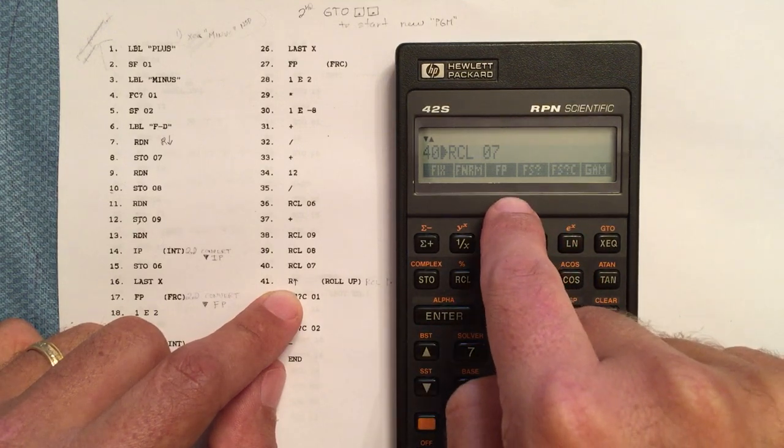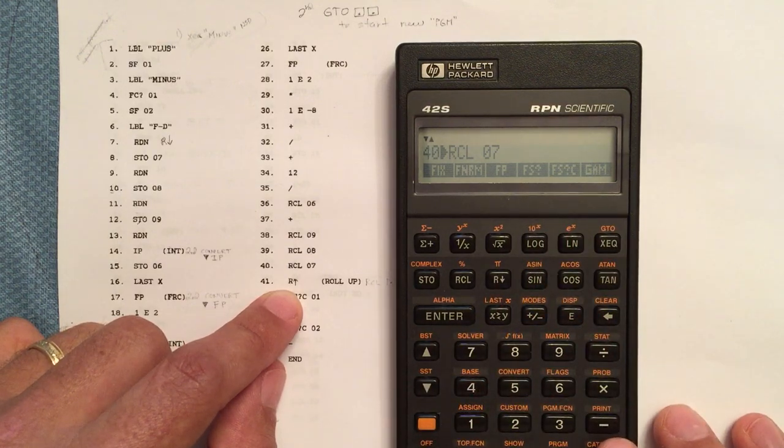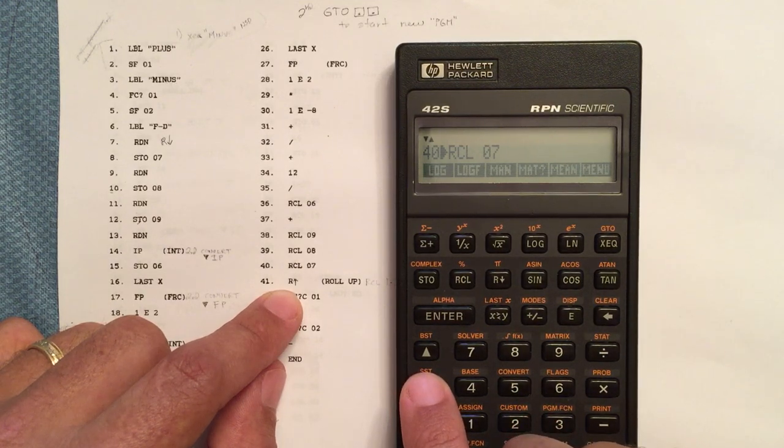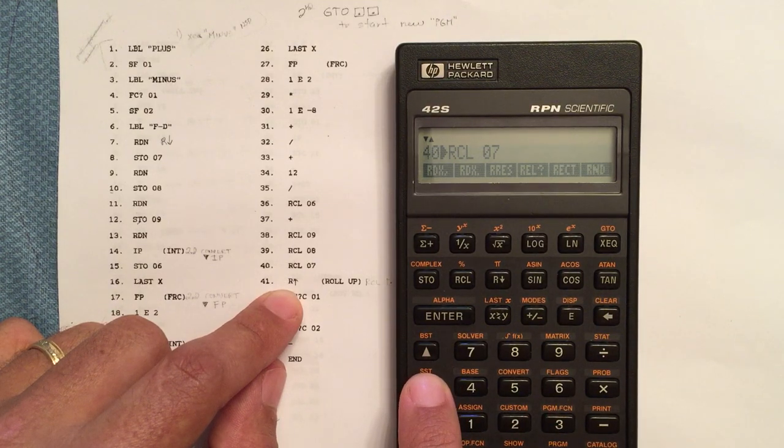I could have done it here, the fractional portion. So if I can't find anything on the keyboard, going to the catalog is a good place to look for it. So let's go down to the R's and see if we've got that roll up.